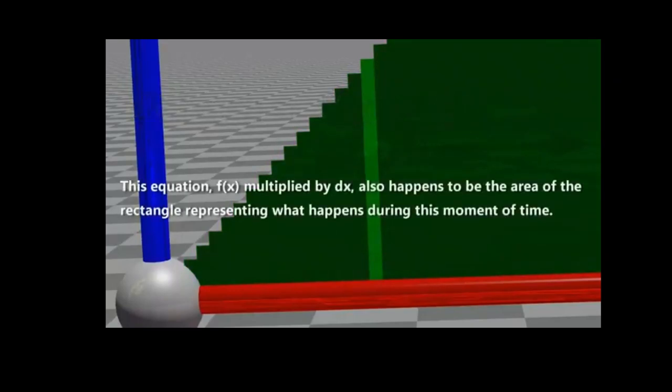This equation, f of x multiplied by dx, also happens to be the area of the rectangle representing what happens during this moment of time.